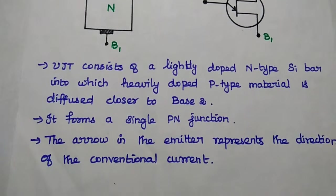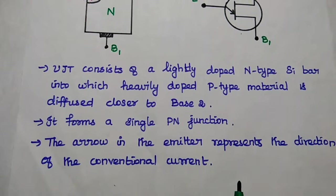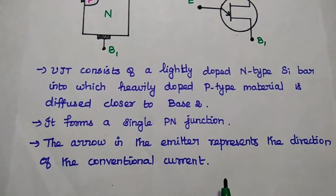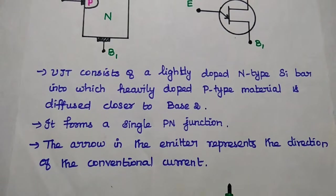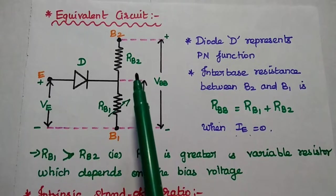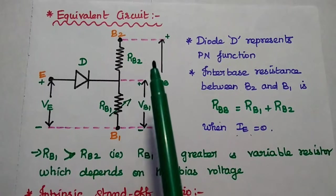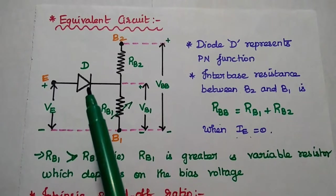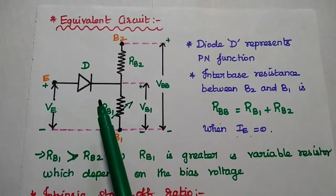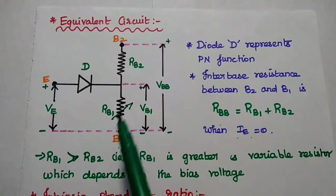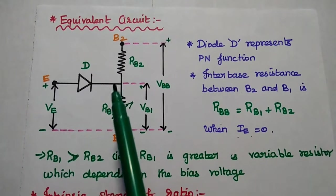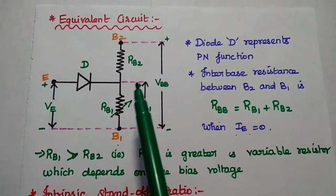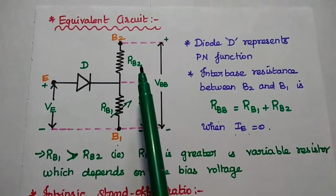The arrow in the emitter represents the direction of conventional emitter current from emitter to base 1. Next, the equivalent circuit of UJT. The diode D represents the PN junction of UJT. The terminals B1 and B2 are represented with their internal resistance values RB1 and RB2.